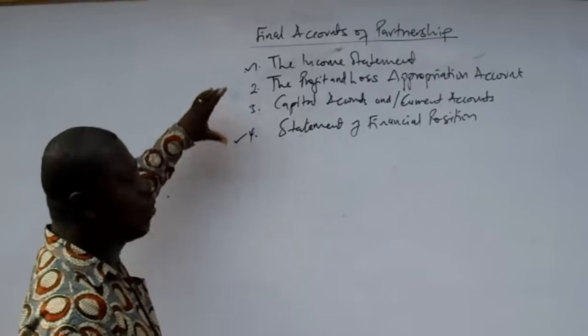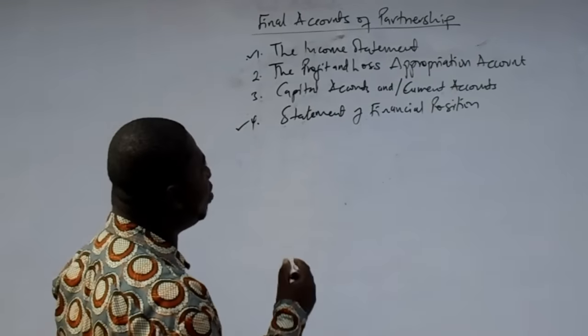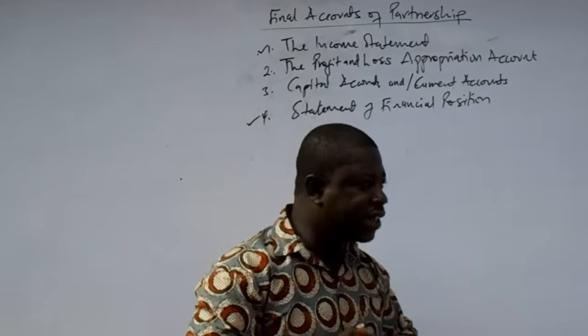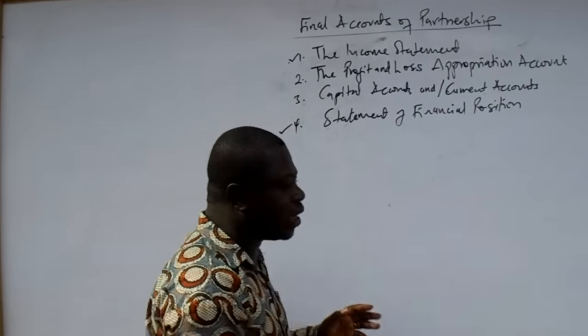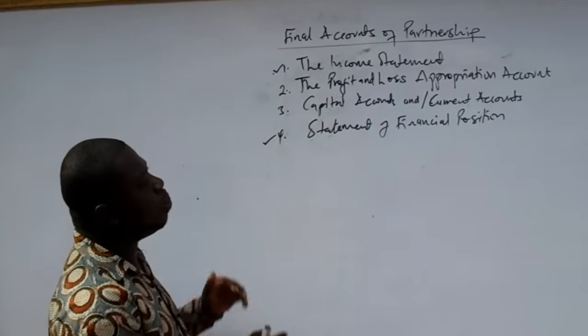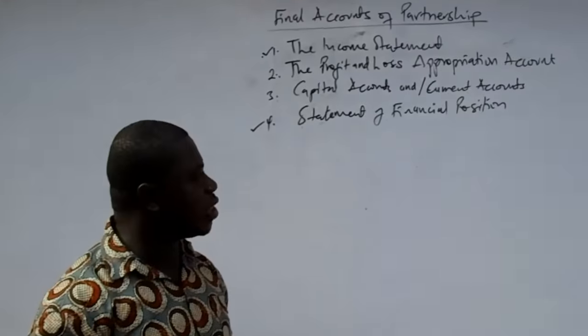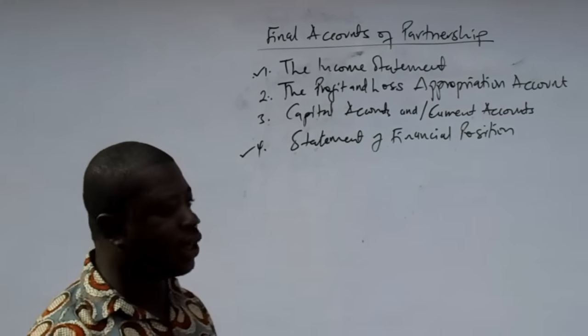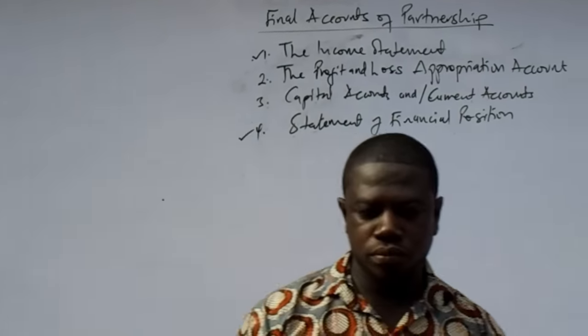Apart from those two that we are already familiar with, we are not too familiar with the profit and loss appropriation account and the adjustments for capital and current accounts. I'm going to help you prepare the profit and loss appropriation account with a format, teach you how to do the adjustments of capital accounts, and look at the current accounts. But before that, I would like to explain the current accounts and capital accounts concepts very clearly.